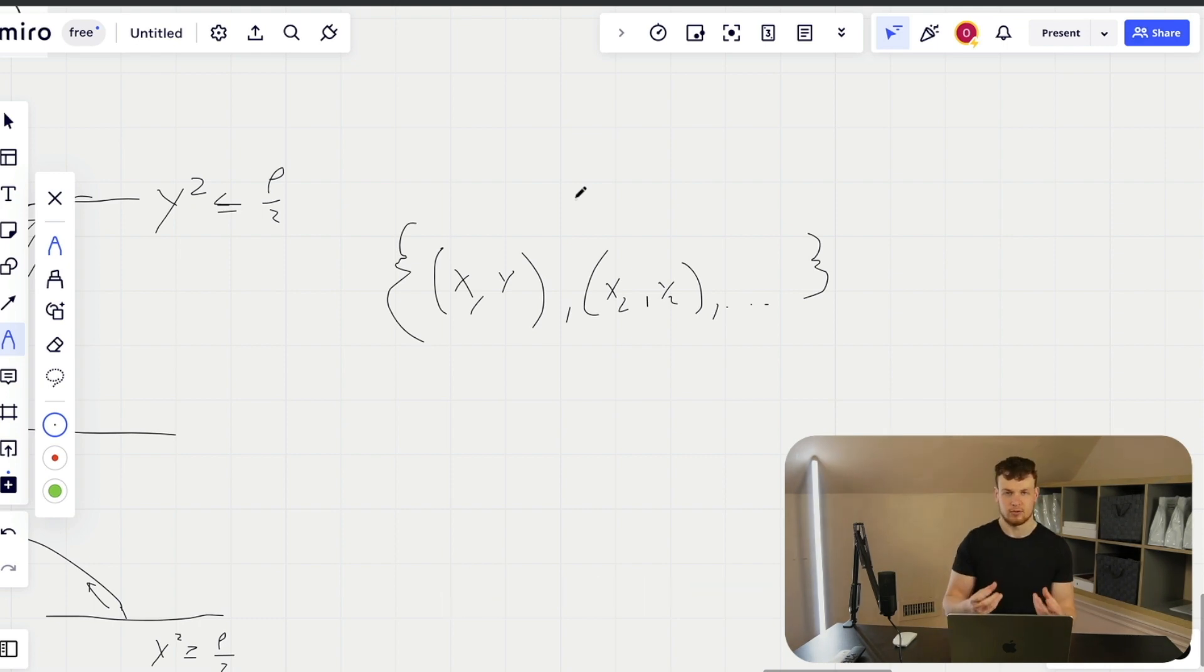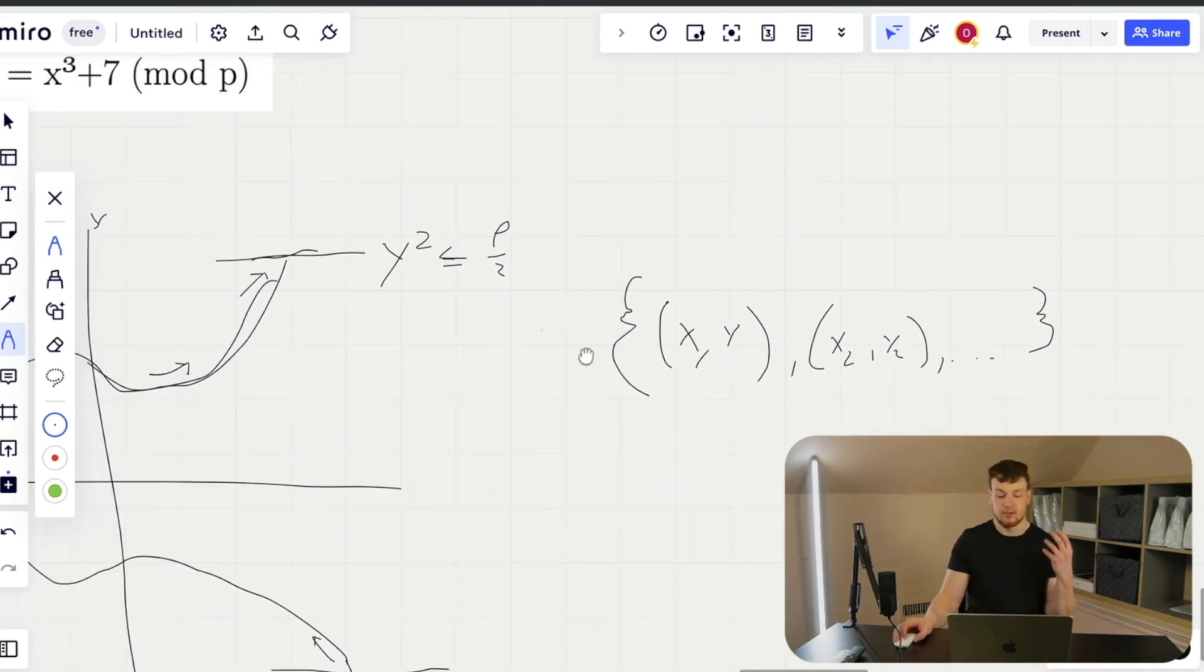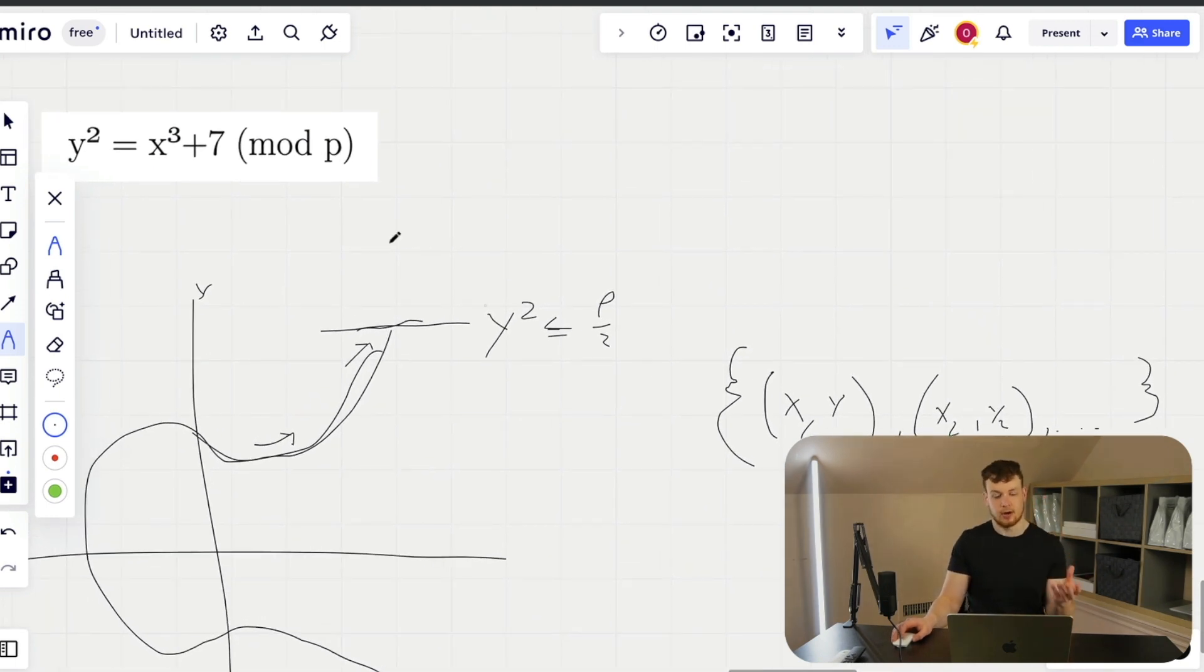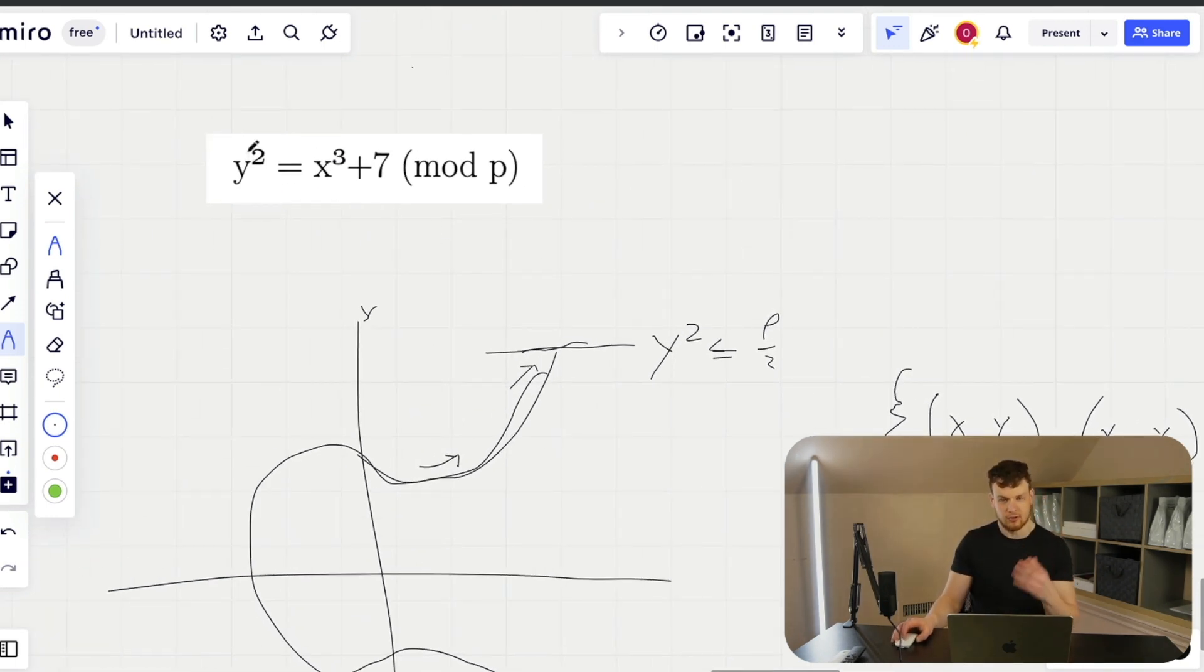Now this being a group, it has several properties. First of all, there is the order of the group, which is n. n is basically the number of points that are defined on the elliptic curve. The points in the elliptic curve are going to be characterized of course by this equation.